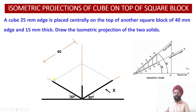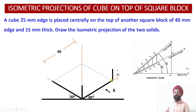We have drawn these two edges lighter using thin construction lines because these two edges will not be visible to the observer. That is why they have not been drawn dark using the object line — they have been drawn using only construction lines so that we get an appropriate feel about the total edges of the square block.